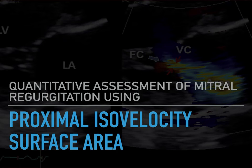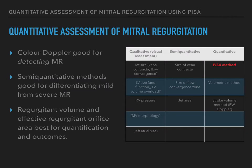Quantitative assessment of mitral regurgitation using proximal isovelocity surface area. Whilst detecting the presence of mitral regurgitation is relatively simple with colour Doppler, quantification of the lesion is more complex. Semi-quantitative measures are good at differentiating between the extremes of MR, i.e. between mild and severe MR. However, a fully quantitative approach is generally required in the clinical setting. Prior studies have shown that regurgitant volume and effective regurgitant orifice area are the quantitative measurements of choice, providing the strongest prediction for clinical outcomes.